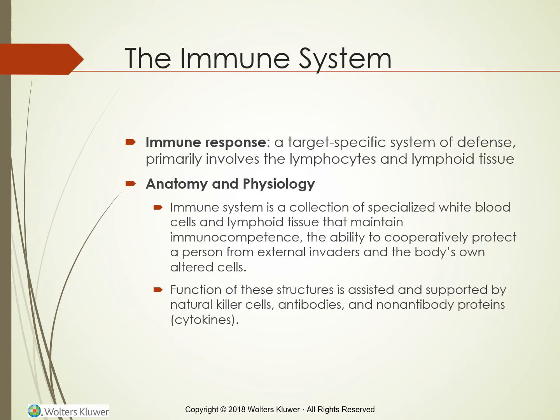The immune system, a target-specific system of defense, primarily involves the lymphocytes, which are specialized cells located in blood and lymphoid tissue. An immune system that is overly active, as in allergic or autoimmune disorders, or one that is functioning poorly, as in AIDS, can be life-threatening. The immune system is a collection of specialized white blood cells and lymphoid tissues that maintain immunocompetence — the ability to cooperatively protect a person from external invaders and the body's own altered cells. The function of these structures is assisted by natural killer cells, antibodies, and non-antibody proteins such as cytokines and the complement system.